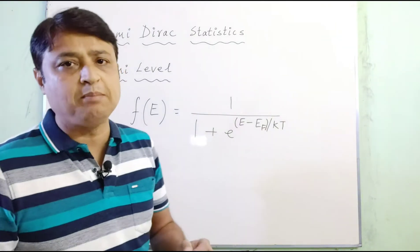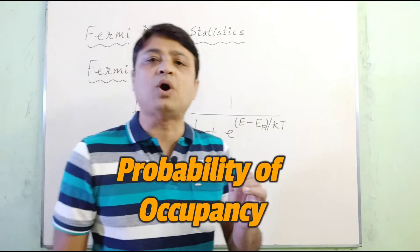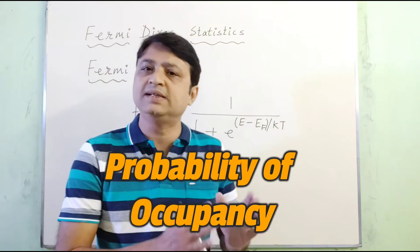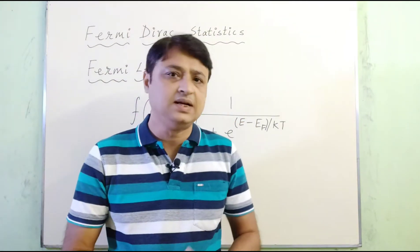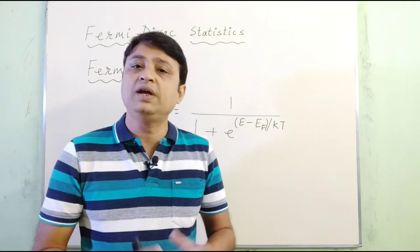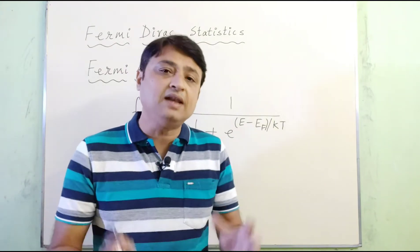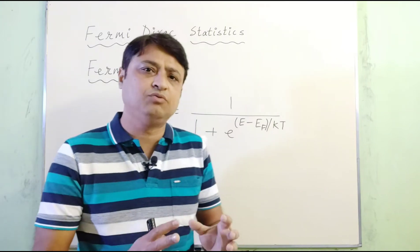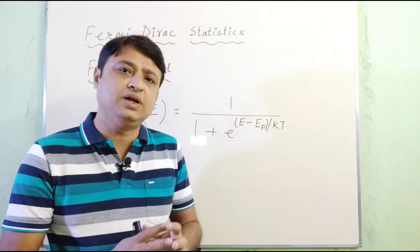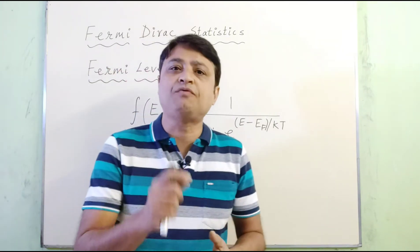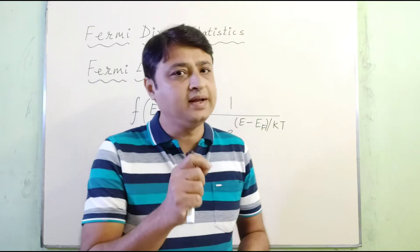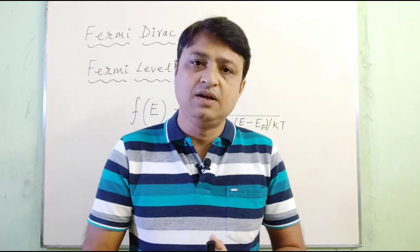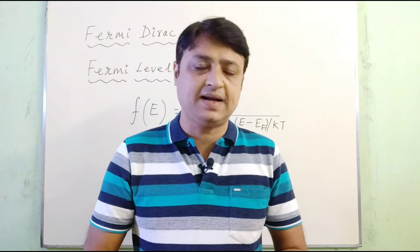Here, Ef is the Fermi energy level, and f(E) is the probability of occupancy of an electron. By using this mathematical distribution function, we can calculate the number of electrons — or rather, the probability of occupancy of an electron in an energy level.